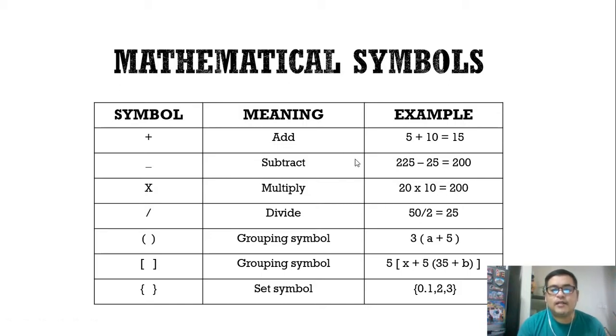This x means multiplication. When we speak of multiplication, a number is being added several times. For example, 20 times 10 means you're going to add 20 ten times, so we have 200. The rest of the symbols: we have divide, we have these grouping symbols—the brackets, the parentheses, and the braces. These mathematical symbols form the language of math.